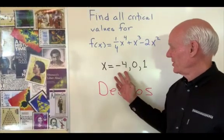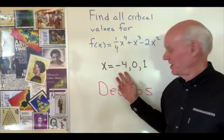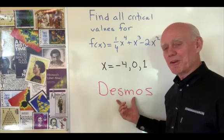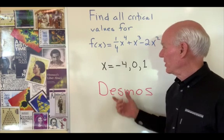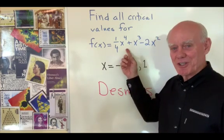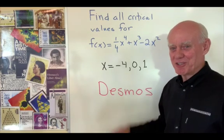Now that we've found these critical values algebraically, let's go to our graphing program, Desmos, and take a look and see what those critical values give us when we look at the graph of this original function. So let's go to Desmos and take a look.